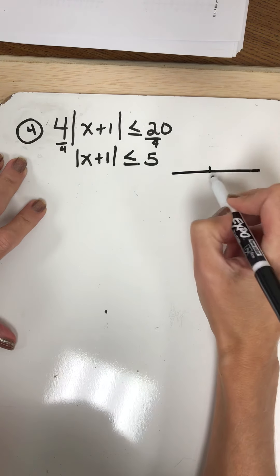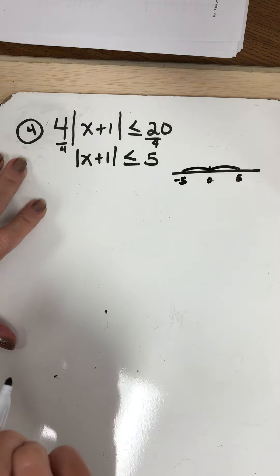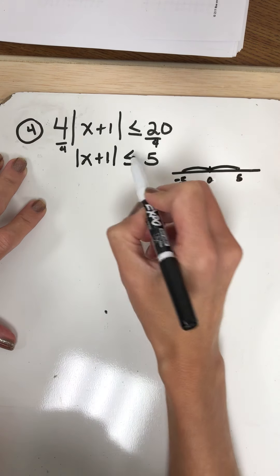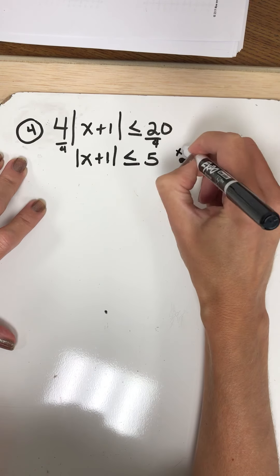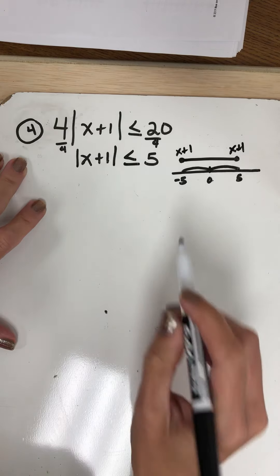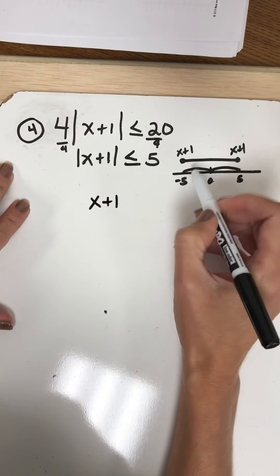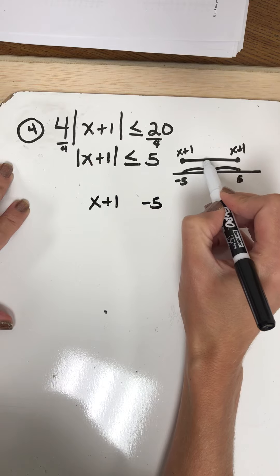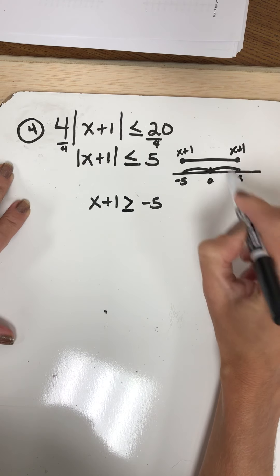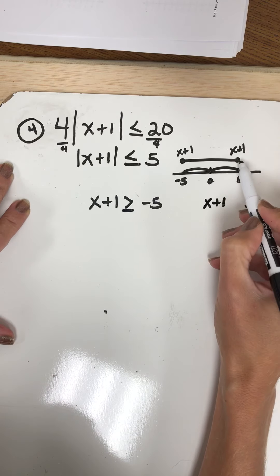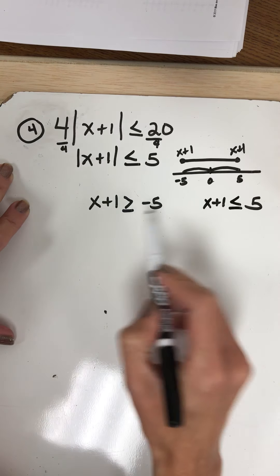Here's my number line, here's 0. Five steps this way gives me positive 5, five steps this way is negative 5. If I'm walking fewer than 5 steps, that puts me in this area right here. So x plus 1 is going to be living in both of those areas. I'm going to write my two inequalities: x plus 1 has to be greater than or equal to negative 5, and x plus 1 is less than or equal to positive 5.